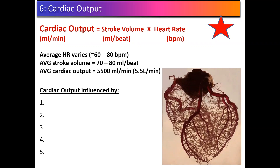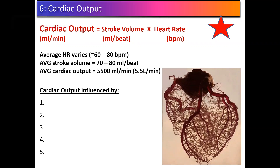Cardiac output can actually be measured in a patient to determine if their heart is working like it should. They can use a catheter, thread it up the femoral vein, go all the way into the heart, and measure how much blood is leaving the heart every minute. Cardiac output is a straightforward mathematical formula: milliliters of blood leaving the heart every minute.